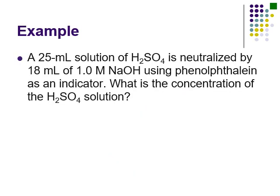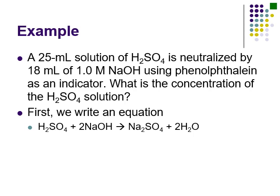Here's an example: a 25 mL solution of sulfuric acid is neutralized by 18 mL of 1 molar sodium hydroxide using phenolphthalein as an indicator. What is the concentration of the H₂SO₄ solution? First, we need a balanced equation: H₂SO₄ plus 2 NaOH gives Na₂SO₄ plus 2 H₂O. Because there are two hydrogens, we need two hydroxides to make two waters.